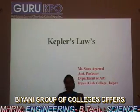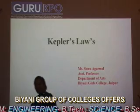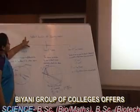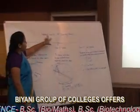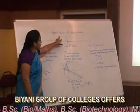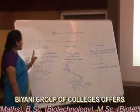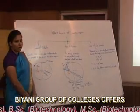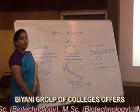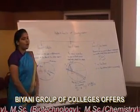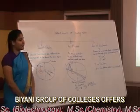As you all know, all planets move around the sun. Kepler gives about three laws. The first law is the law of orbits, the second law is the law of area, and the third one is the law of time periods.